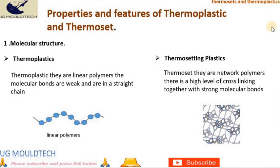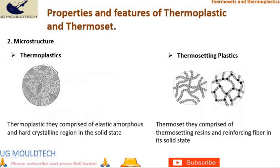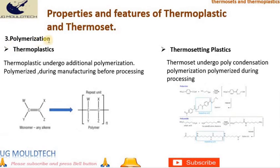Summarized differences in properties and features: 1. Molecular structure — thermoplastics are linear polymers with weak molecular bonds in a straight chain; thermosets are networked polymers with a high level of crosslinking and strong molecular bonds. 2. Microstructure — thermoplastics comprise elastic amorphous and hard crystalline regions in the solid state; thermosets comprise thermosetting resins and reinforcing fiber in their solid state. 3. Polymerization — thermoplastics undergo addition polymerization, polymerized during manufacturing before processing; thermosets undergo polycondensation polymerization, polymerized during processing.